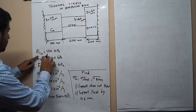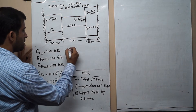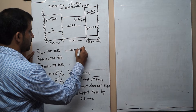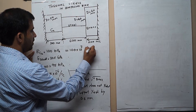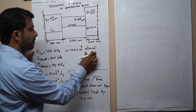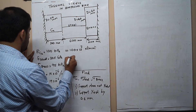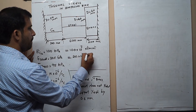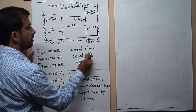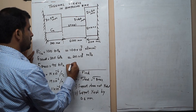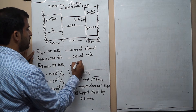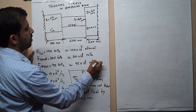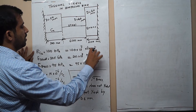First, we convert the elasticity units. 100 GPa equals 100 × 10³ N/mm² (MPa). Similarly, steel is 205 × 10³ N/mm² and brass is 95 × 10³ N/mm². All dimensions will be in mm.